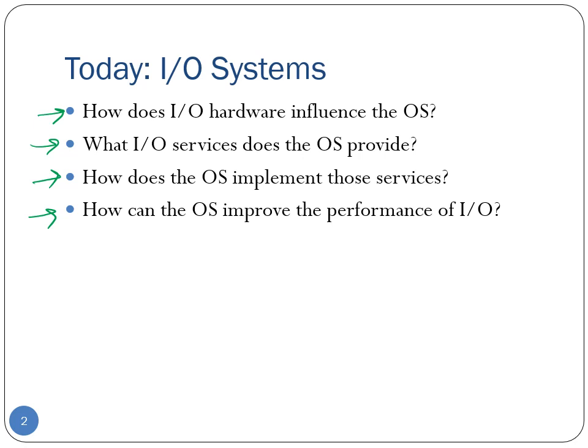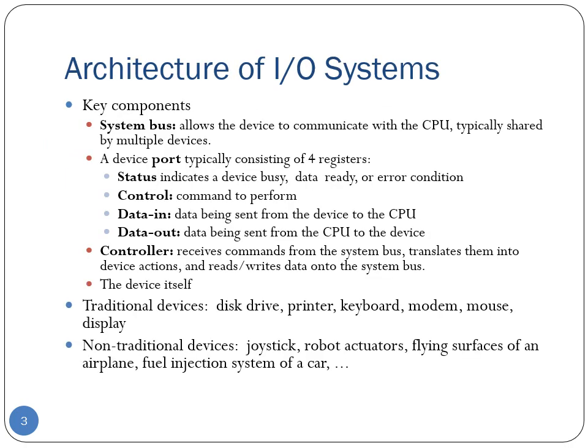Most I/O devices are extremely slow compared to the CPU — the keyboard and mouse are very slow when compared to CPU clock speeds. Therefore we cannot allow the CPU to directly communicate with these slow I/O devices, as it will waste a lot of the CPU's time. There are certain generic optimizations and techniques provided by operating systems to make this communication more efficient and faster.